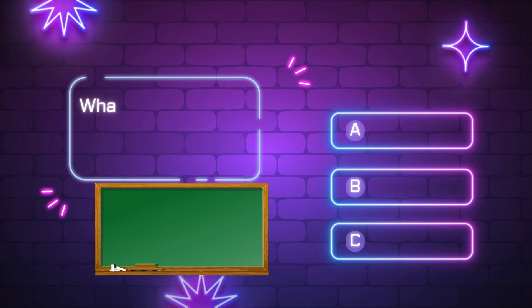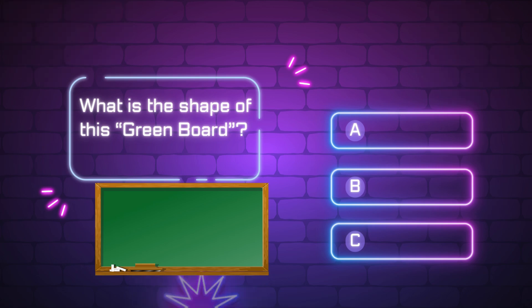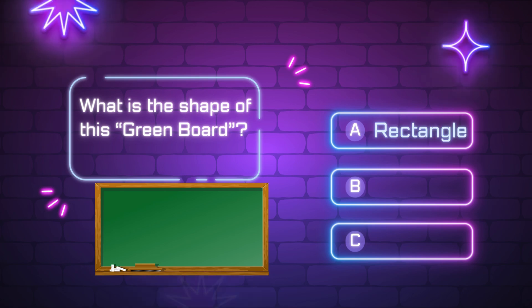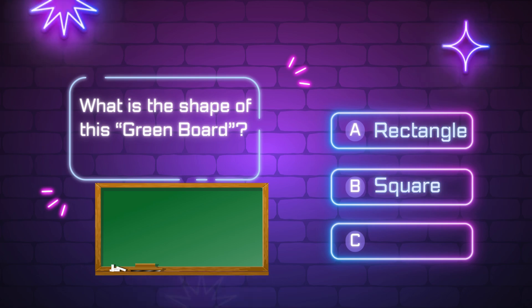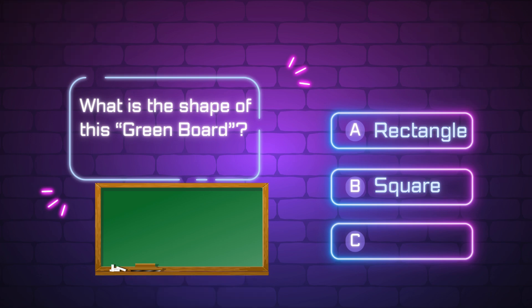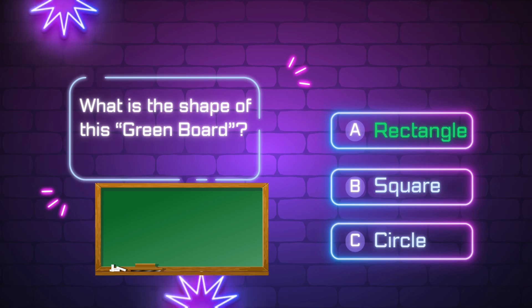What is the shape of this green board? A, rectangle. B, square. C, circle. Yes, it is a rectangle.